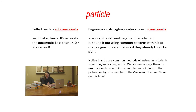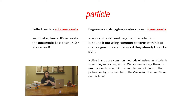Consider the word 'particle' and the differences between how a skilled reader recognizes it versus how a beginning or struggling reader does. A skilled reader can subconsciously read it with a glance — less than one-tenth of a second. A beginning or struggling reader has to consciously sound it out, use common spelling patterns, or use an analogy to a word they already know, like 'article' or 'part.'